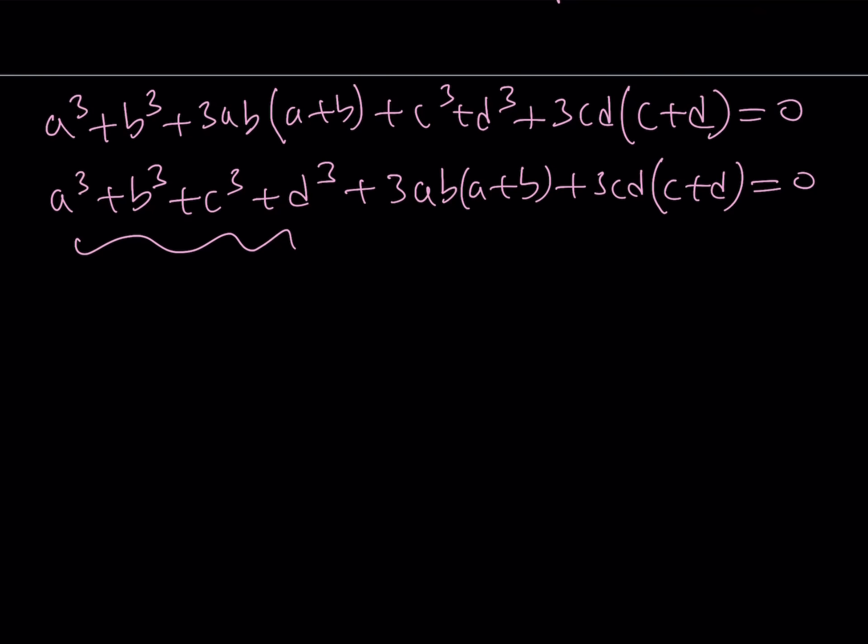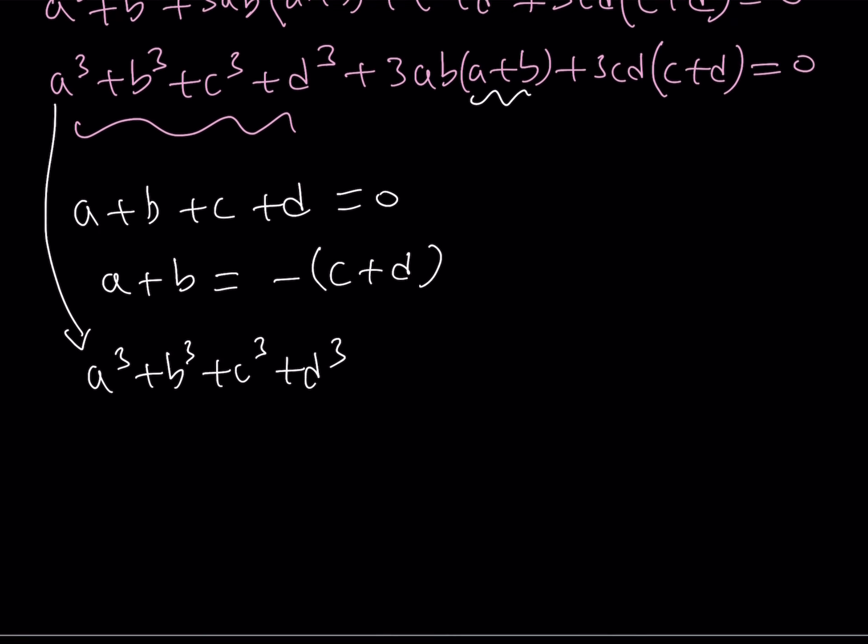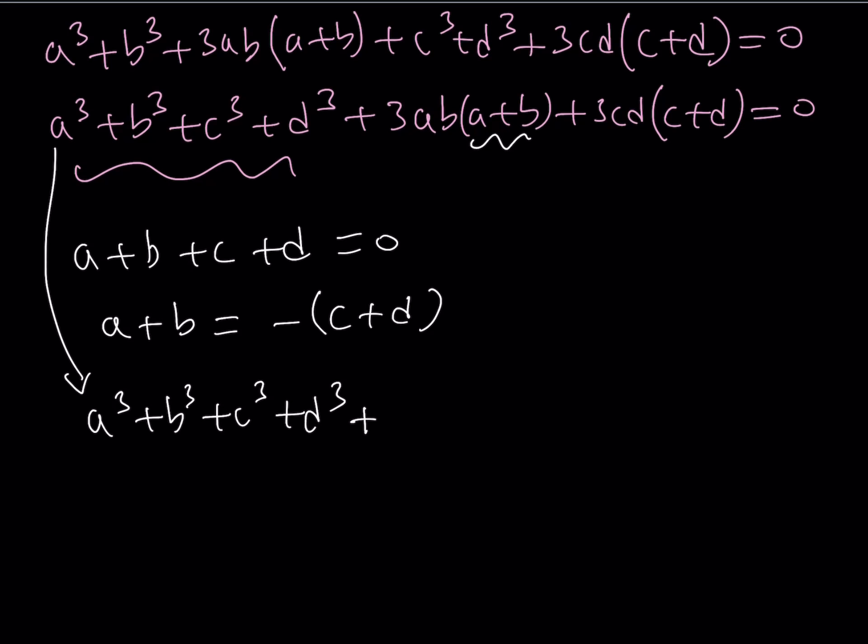Remember, A plus B plus C plus D is equal to 0. So that actually gave us a nice identity at the beginning. From here we can safely say that A plus B can be written as the opposite of C plus D. So why don't we go ahead and use that here. Replace A plus B with the opposite of C plus D. So from there we get A cubed plus B cubed plus C cubed plus D cubed. And then here, I'm going to replace A plus B with the opposite. So I'm going to have to change the sign here to a minus sign. The 3AB is going to stay, but I'll have to replace A plus B with the opposite of C plus D.